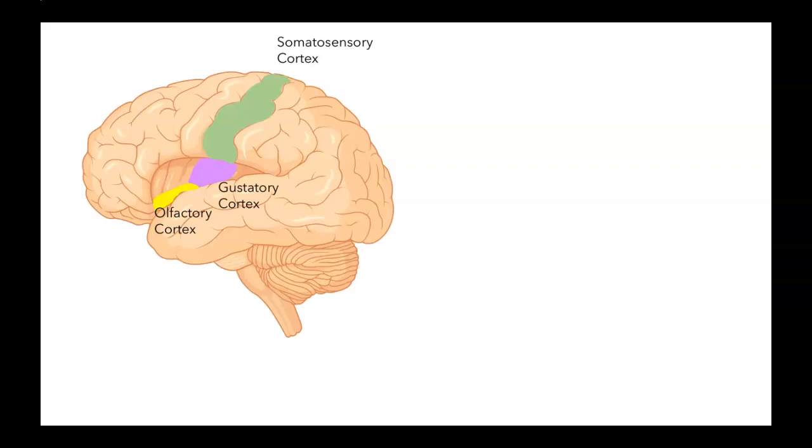I mentioned the orbital frontal cortex, which serves as a secondary gustatory cortex. This part of the brain also contains many multimodal neurons. I mentioned the topographical map of the body surface in the somatosensory cortex, and you might be wondering if there's a map of the tastants in the gustatory cortex.